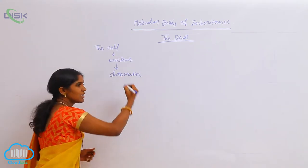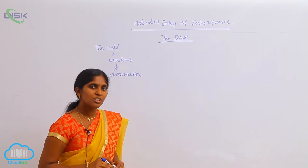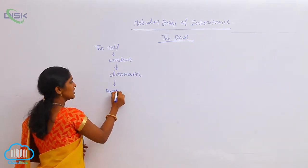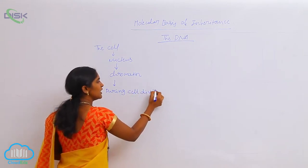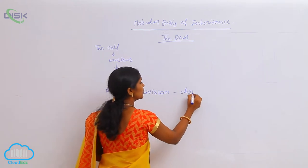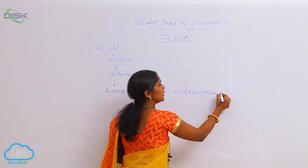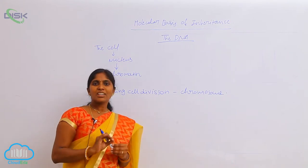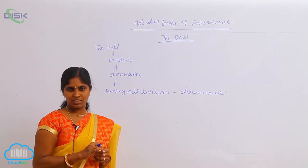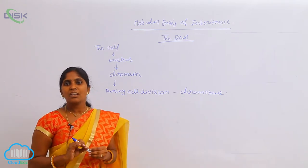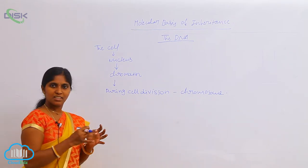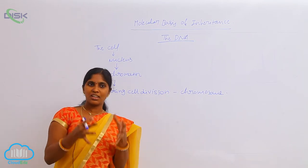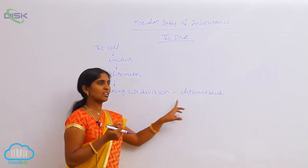The chromatin material is a major and important component for inheritance. During cell division, the chromatin material is condensed in the form of chromosomes. The chromatin present in the cell is condensed into thread-like structures during cell division. These thread-like structures are called chromosomes.